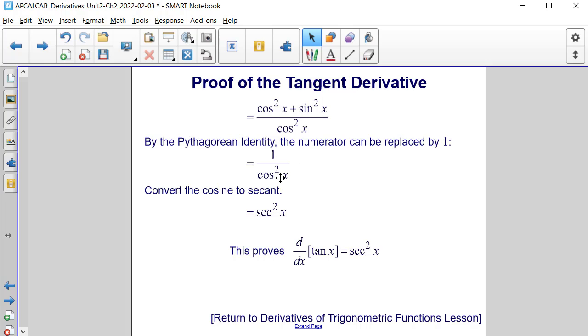So we have 1 divided by cosine squared of x, and then if we convert the cosine into secant, it becomes secant of x squared, or secant squared of x. This proves that the derivative with respect to x of tangent of x is equal to secant squared of x.